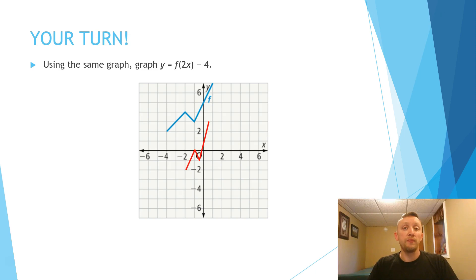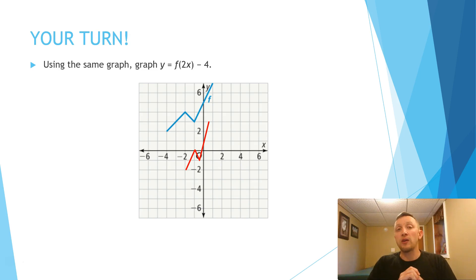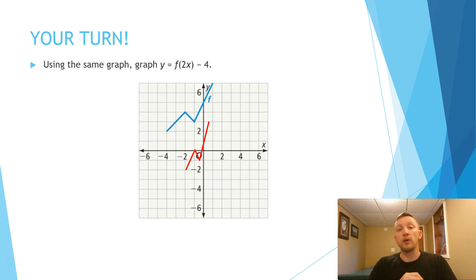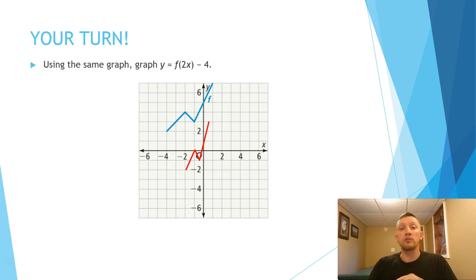If you compressed it to be half the size, the y stays the same but the x is halved. For the point negative 4, 2: half of negative 4 is negative 2, so it becomes negative 2, 2, then move it down 4 units. The peak at negative 2 becomes negative 1 after halving. The far right point at 1, 7 becomes 0.5, 7, then move down 4. Hopefully you did well combining those transformations.